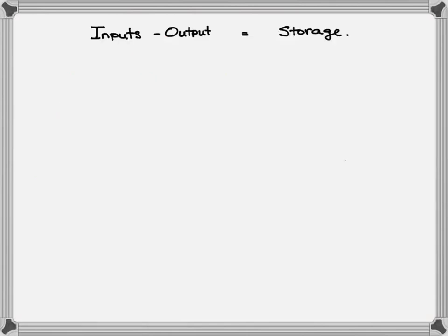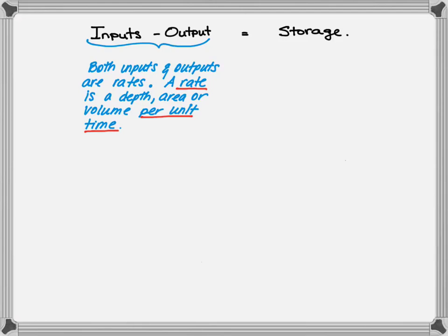The governing equation for a hydrologic budget is the input minus the output equaling the storage. Both input and output are rates of water. A rate is something per unit time. In our case, we'll be dealing with depth of water per unit time, like a rainfall intensity, an area of water per unit time, or a volume of water per unit time, like a flow rate.